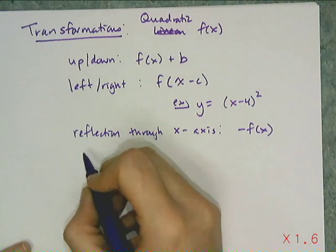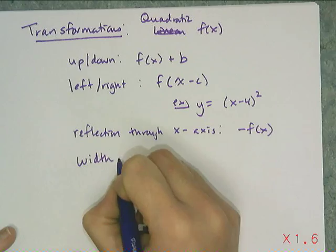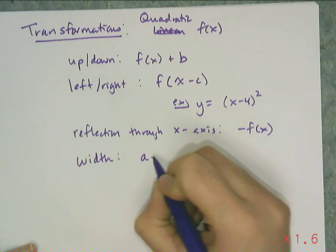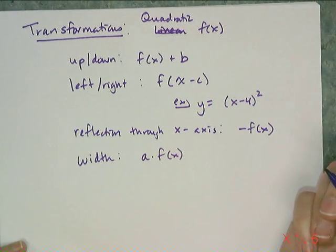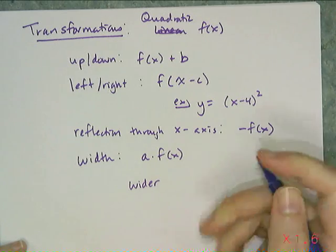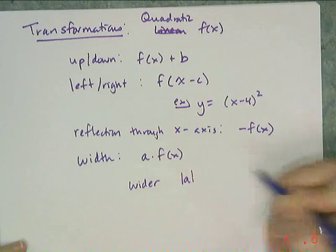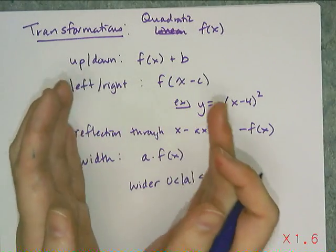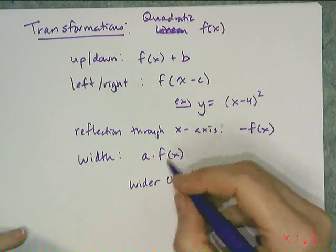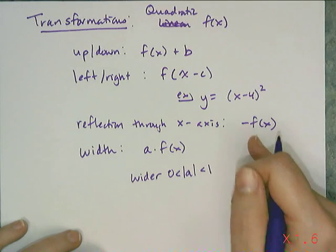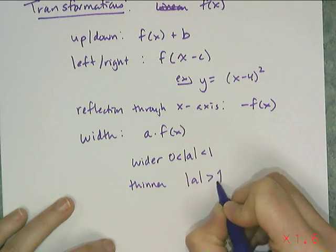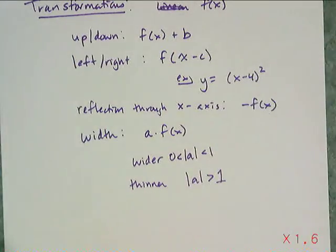And then the last thing we talked about with transformations was the width of the parabola, whether it was a skinnier or wider parabola. And that transformation takes some constant a, some non-zero constant a, and you multiply it by f(x). To make my parabola wider than the f(x) function, I would need an a value, or the absolute value of the a value, to be between 0 and 1. Because to make it wider what I have to do is I have to shrink all the y values down, and the only way to shrink the y values down is to multiply it by some fraction. Remember the sign tells you whether I'm going to flip it through the x-axis or not, so that's why we have to put it in absolute value. And then if I want a thinner parabola, the absolute value of a has to be greater than 1. So I'm trying to get the y values to grow up faster, so I have to multiply it by a constant that's greater than 1, like a 2, or a 3, or a 4, or something like that. And that's going to make my parabola thinner.